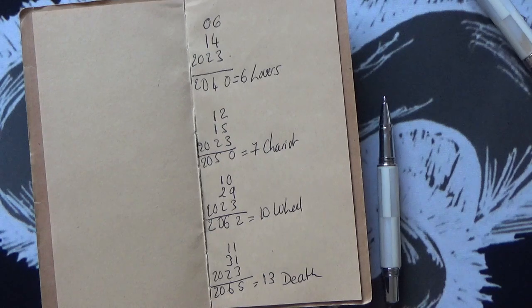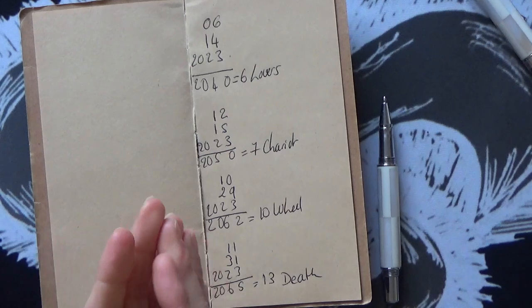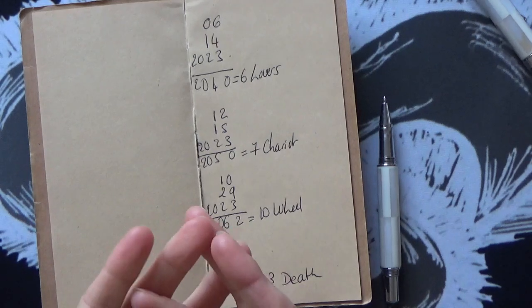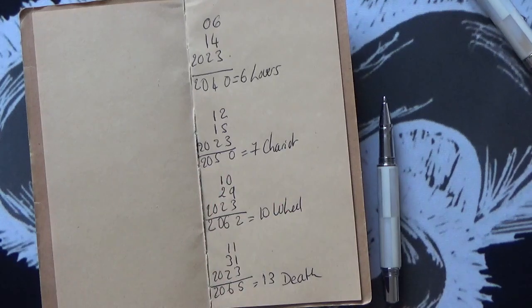The other thing as well: if your annual card matches your tarot birth card, then you are in for a very interesting year. It means that your soul's purpose and the lessons that you are meant to learn are going to be greatly intensified, so it's a really nifty extra bit of information for you to think about your year.